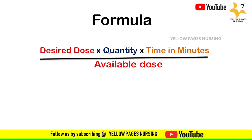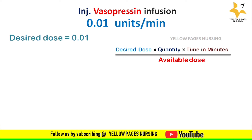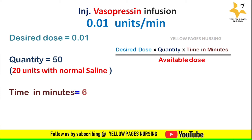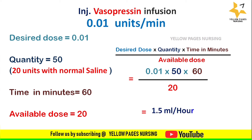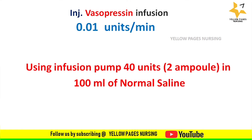For the example: 0.01 units per minute using a syringe pump — 20 units (1 ampoule) of vasopressin in 50 ml of normal saline. The desired dose is 0.01, quantity is 50, time in minutes is 60, and available dose is 20. Applying all into the formula we get the answer: 1.5 ml per hour.